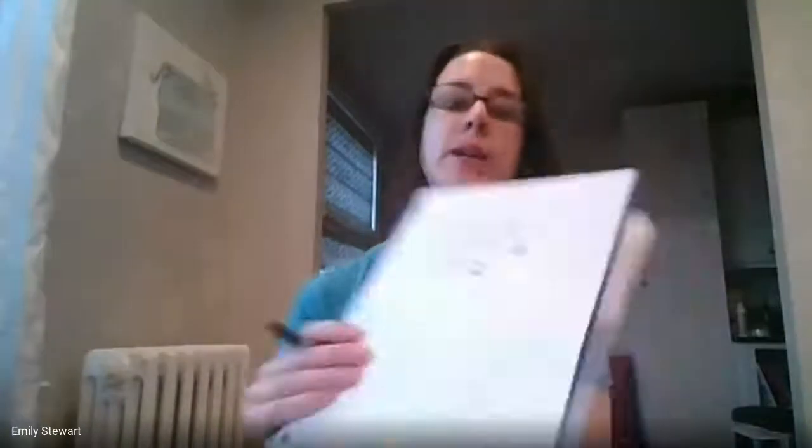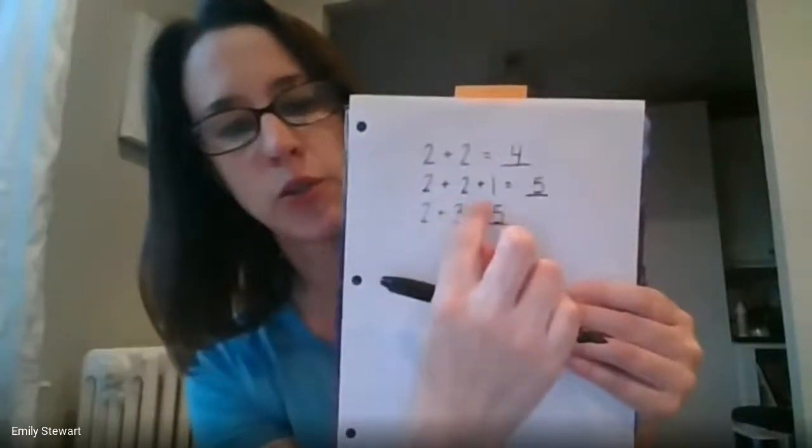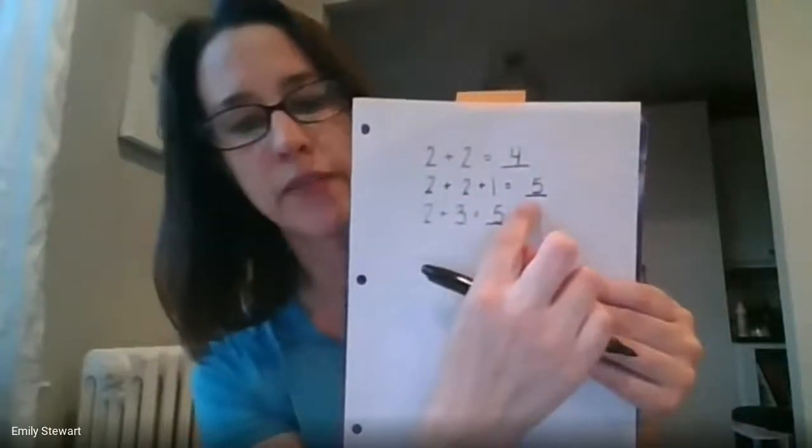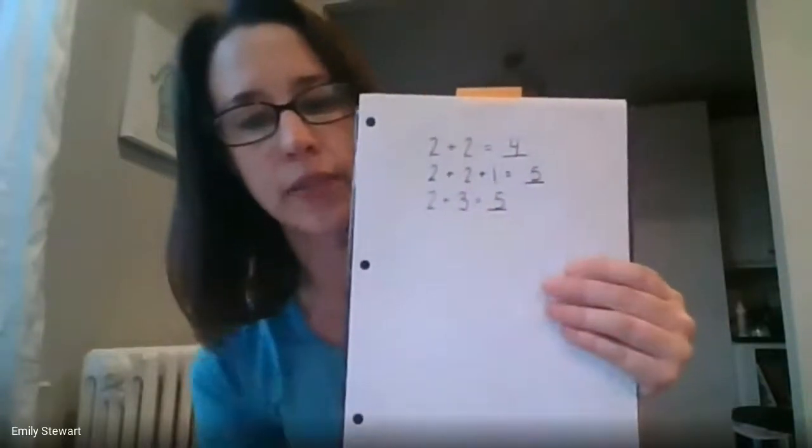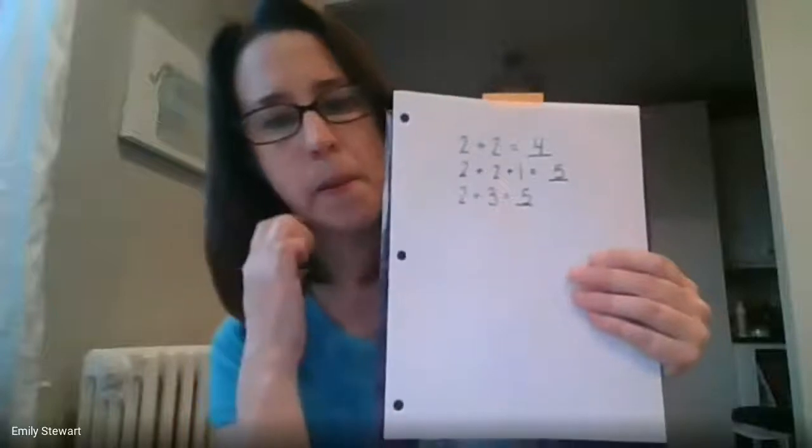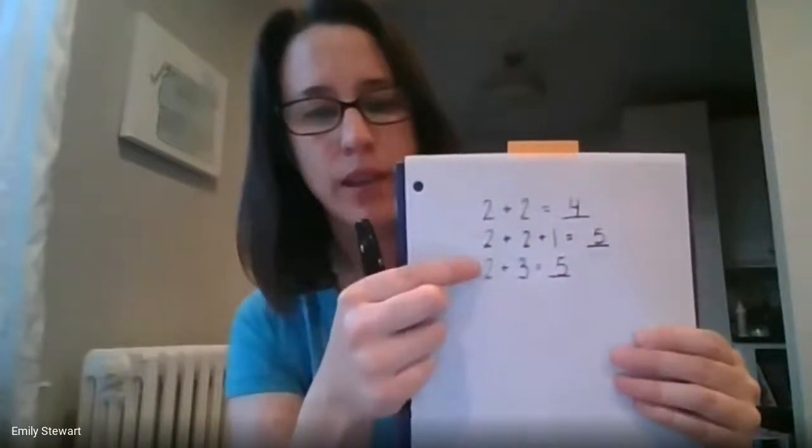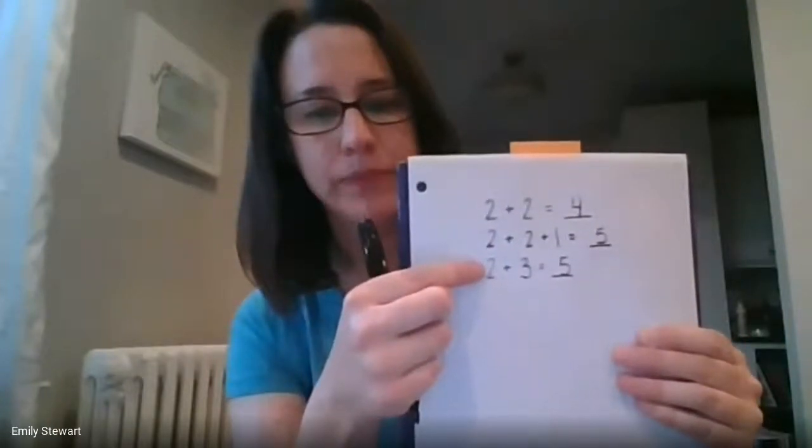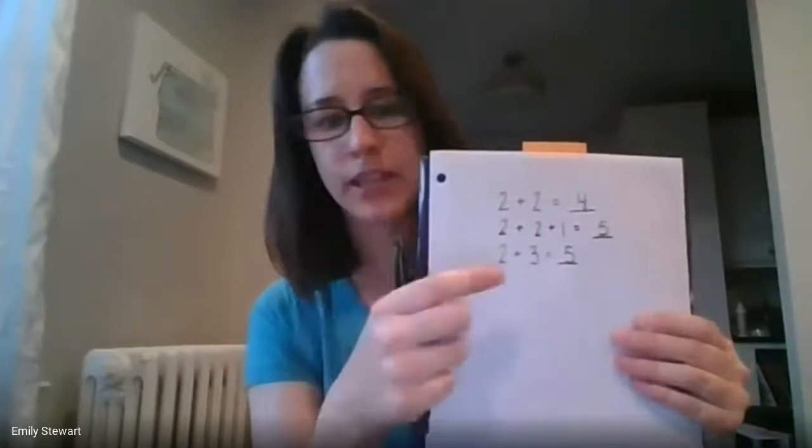All right, now, mathematicians, I'm wondering if anybody noticed anything because two plus two plus one is the same as five and two plus three is the same as five. I wonder why that happened. Anybody notice anything between this problem and this problem?